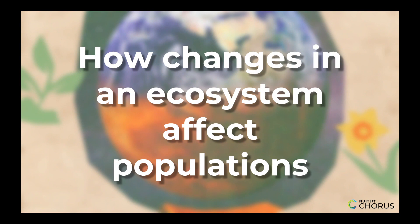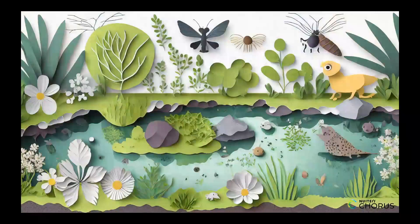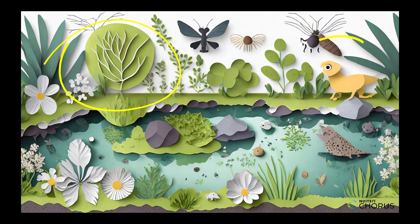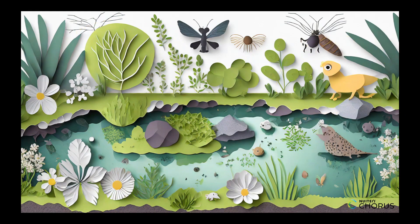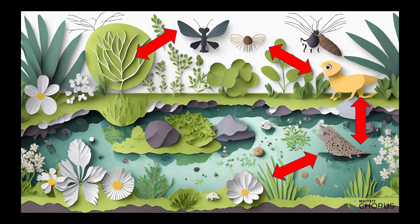Have you ever wondered how all the living things in an ecosystem are connected? An ecosystem is made up of living things like plants and animals, and non-living things like rocks and water. All the living things in an ecosystem are connected, and changes to one part of the ecosystem can have a big effect on everything else.